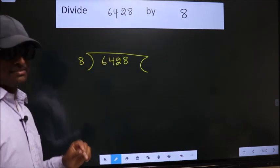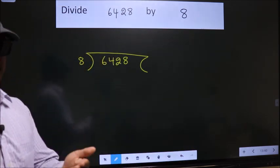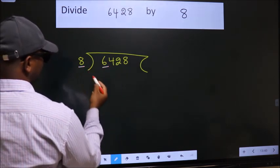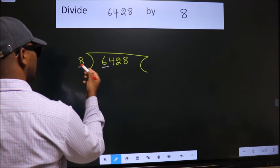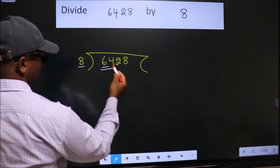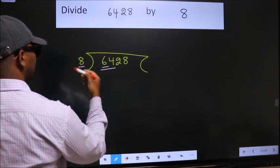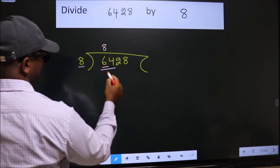This is your step one. Next, here we have 6. 6 is smaller than 8, so we should take two numbers: 64. When do we get 64 in the 8 table? 8 eights 64.